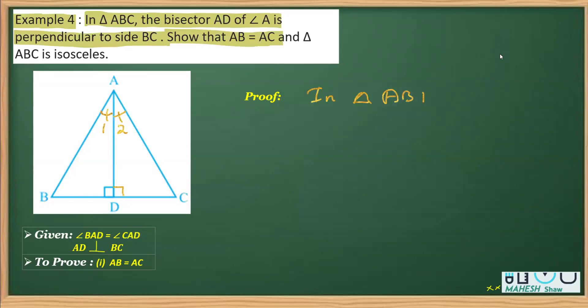As I can see, angle one is equal to angle two, and the reason is that AD bisects angle A.